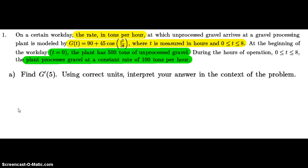Part a: find g prime of 5 using correct units and interpret your answer in the context of the problem. So for g prime of 5, we're going to put g of t in the calculator as y1 since this is a calculator problem. Then we're going to do math 8 to get the numeric derivative function, put y1 in there, with respect to x, and then at 5.